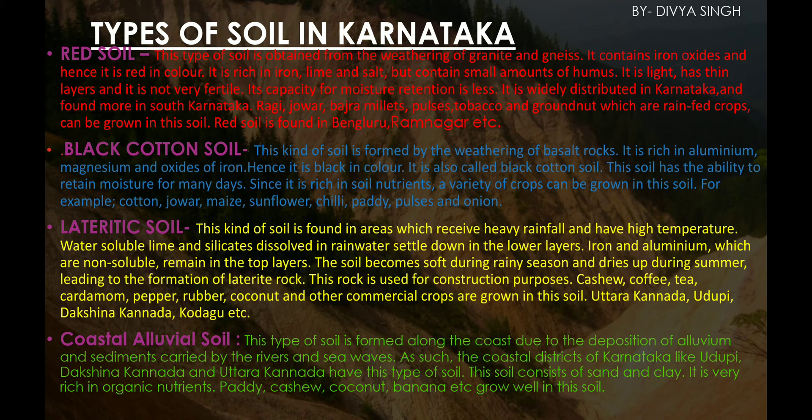Coastal alluvial soil is found along the coast due to the deposition of alluvium and sediments carried by rivers and sea waves. The coastal districts of Karnataka — Udupi, Dakshina Kannada, and Uttara Kannada — have this type of soil. It consists of sand and clay and is very rich in organic nutrients. Paddy, cashew, coconut, and banana can be grown in coastal alluvial soil.